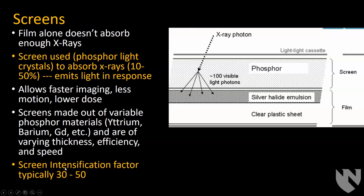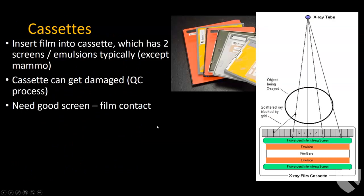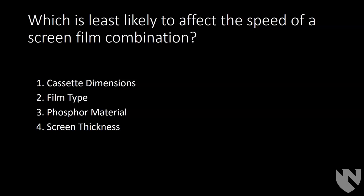Cassettes are basically the name of the whole assembled process: a film inserted in a cassette with two screens. The exception is mammography, which has one screen for higher resolution. Cassettes can get damaged — you can break the screens — so you need to do QC on them. You also need to ensure good screen-to-film contact for proper light transfer. The next question: what is least likely to affect the speed of a screen-film combination? The answer is cassette dimensions. The size of the cassette doesn't affect how long you need to expose it.